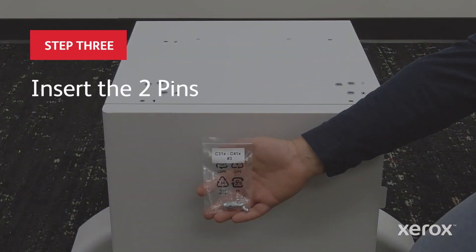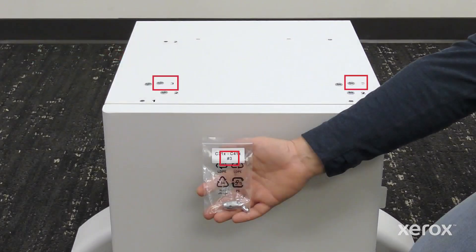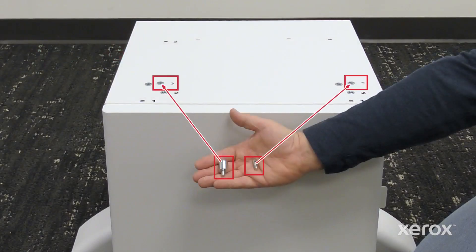To install the right panel back, align the large center hole with the slot. Insert the two pins on the top frame of the assembled stand.